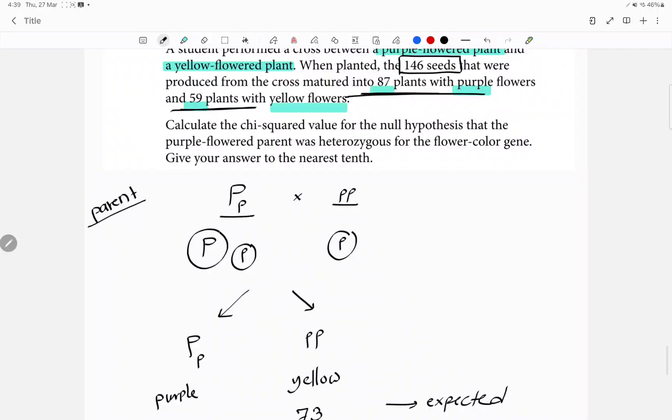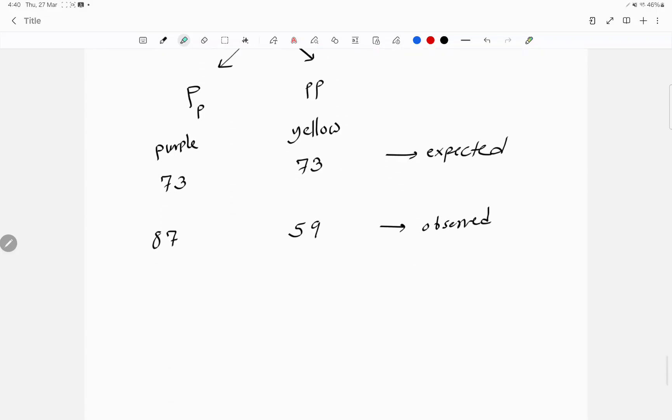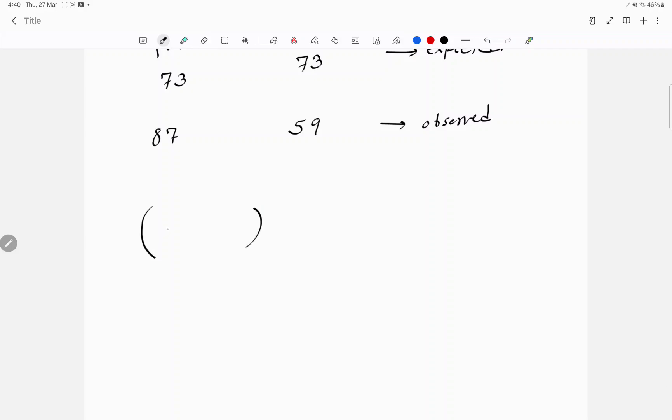The question says calculate the chi-square value. The equation for the chi-square value is the observed minus the expected squared over the expected, then observed minus expected squared over the expected. Let's now do the math. And I got 5.369.